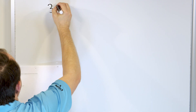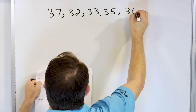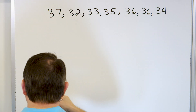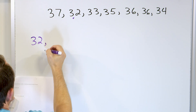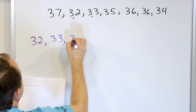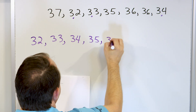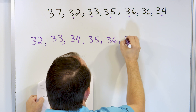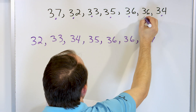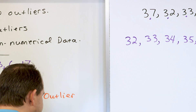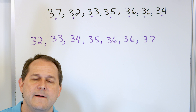Let's take a look at problem number two. We have this data: 37, 32, 33, 35, 36, 36, 34. Do we want to use the mean, the median, or the mode? First, write them in order from least to greatest: 32, 33, 34, 35, 36, 36, 37. Should we use the mean, median, or the mode? We only use the mode in general if we have non-numerical data. Here we have numerical data, so we're not going to use the mode.